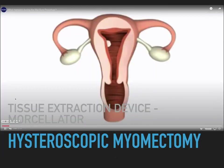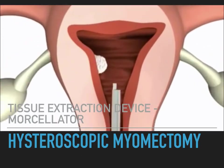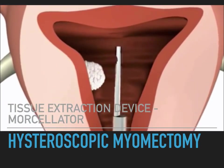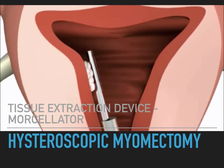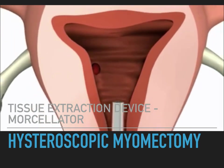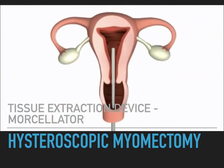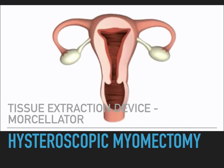The second method is by use of a hysteroscopic tissue extraction device, also referred to as a morcellator. It utilizes a rotary blade for resection and suction tubing to remove tissue fragments. There are no data or guidelines regarding the risk of dissemination of potentially malignant tissue with hysteroscopic tissue extraction devices, as with laparoscopic morcellation of uterine leiomyomas.